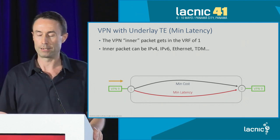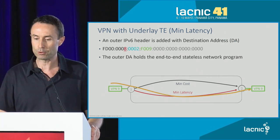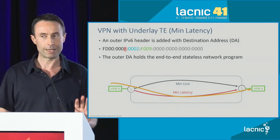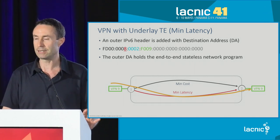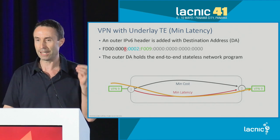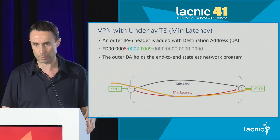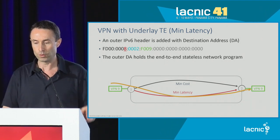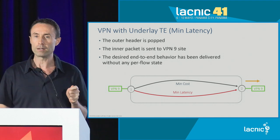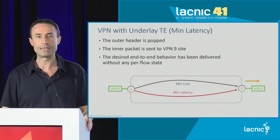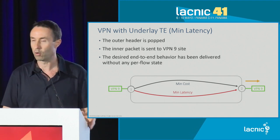The packet from the VPN client is going to reach the ingress PE number one, where we're going to encapsulate it into another IPv6 header without any segment routing extension header — just another IPv6 header. And in the destination address, there is the magic. This is the network programming that is built with up to six micro instructions. Once the program is executed, the packet will reach the egress PE number two, where it will pop the other IPv6 header and release the inner packet. The inner packet can be IPv4, IPv6, Ethernet, TDM — whatever you wish.